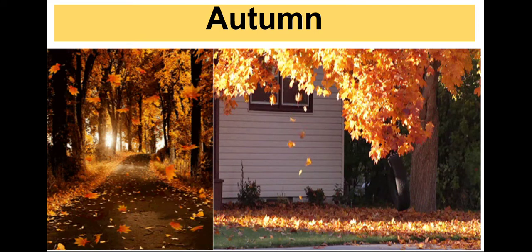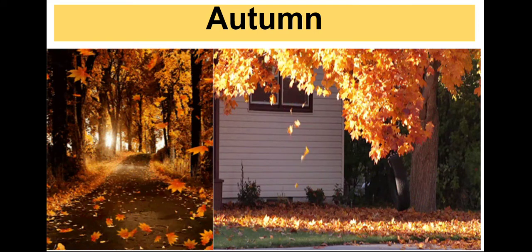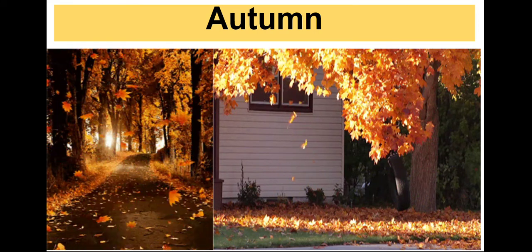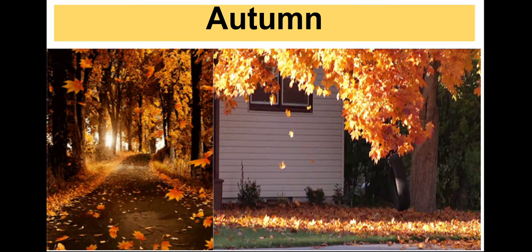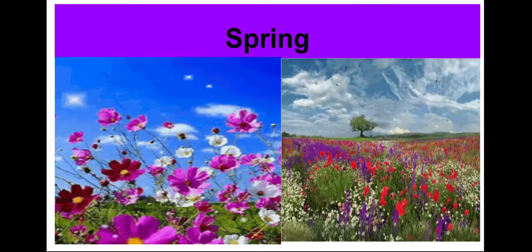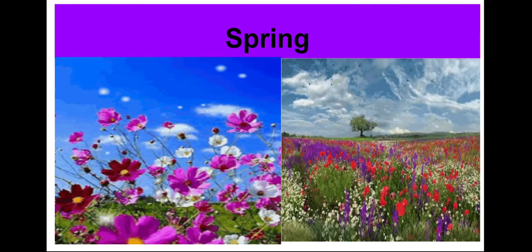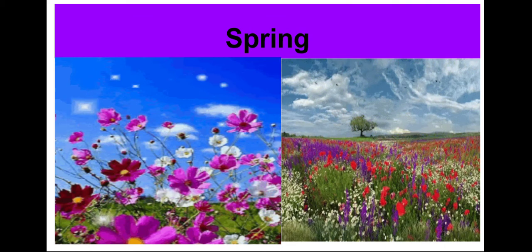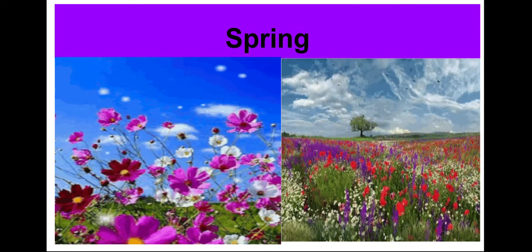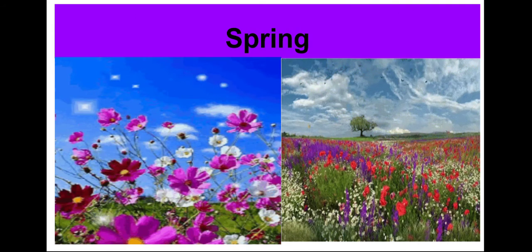Based on the season, we also change our clothes. In summer, we wear cotton clothes. In winter, we wear sweaters. Even our food and activities change with the seasons. Spring is the blooming season — many flowers bloom, and it is a colorful season. We can see more butterflies and birds enjoying the spring season.